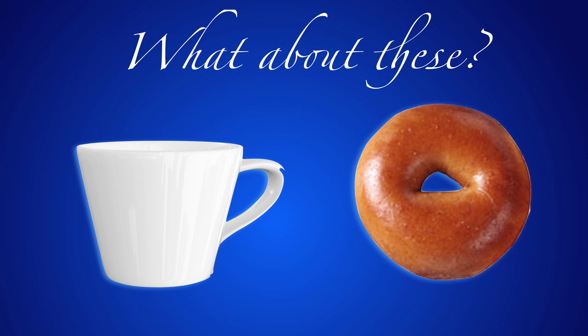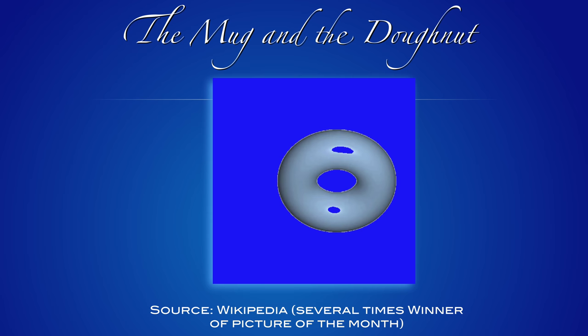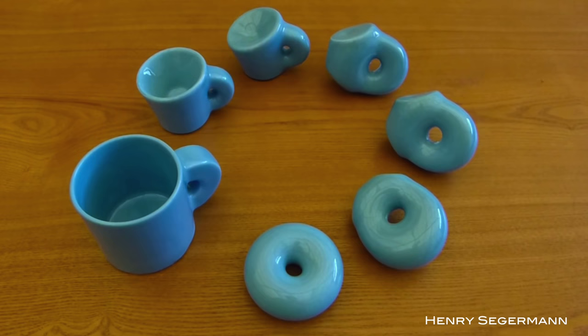What about these? This is a famous allegory. In the picture, we see a cup and a doughnut — they are topologically equivalent. The deformation animation given in Wikipedia has been a multiple winner for the picture of the month. So here it is, lifted from Wikipedia, showing the equivalence of these two objects.